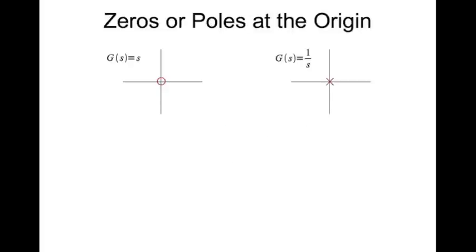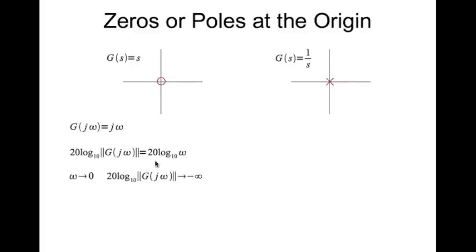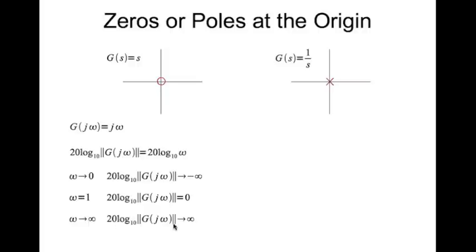Now let's look at poles and zeros at the origin. If we replace s equal to j*omega, then a zero at origin becomes j*omega. If you take the magnitude in decibels, you get 20 log base 10 of omega. When omega tends to zero, this goes to zero and log base 10 of zero is minus infinity — so the magnitude of a zero at the origin ends up being minus infinity decibels. When omega equals 1 you get 0 dB, and when omega equals infinity you get plus infinity decibels.